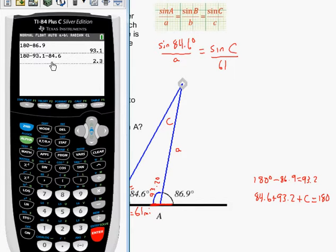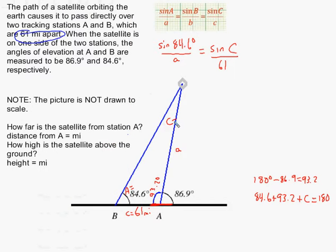Going to my calculator, I took 180, subtracted off the 93.1, but it actually was 93.1, but I did it right in the calculator and subtracted off 84.6. I got that angle C is 2.3 degrees.